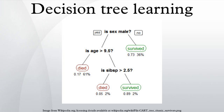An example is shown on the right. Each interior node corresponds to one of the input variables, and there are edges to children for each of the possible values of that input variable. Each leaf represents a value of the target variable given the values of the input variables represented by the path from the root to the leaf. A decision tree is a simple representation for classifying examples, and decision tree learning is one of the most successful techniques for supervised classification learning.